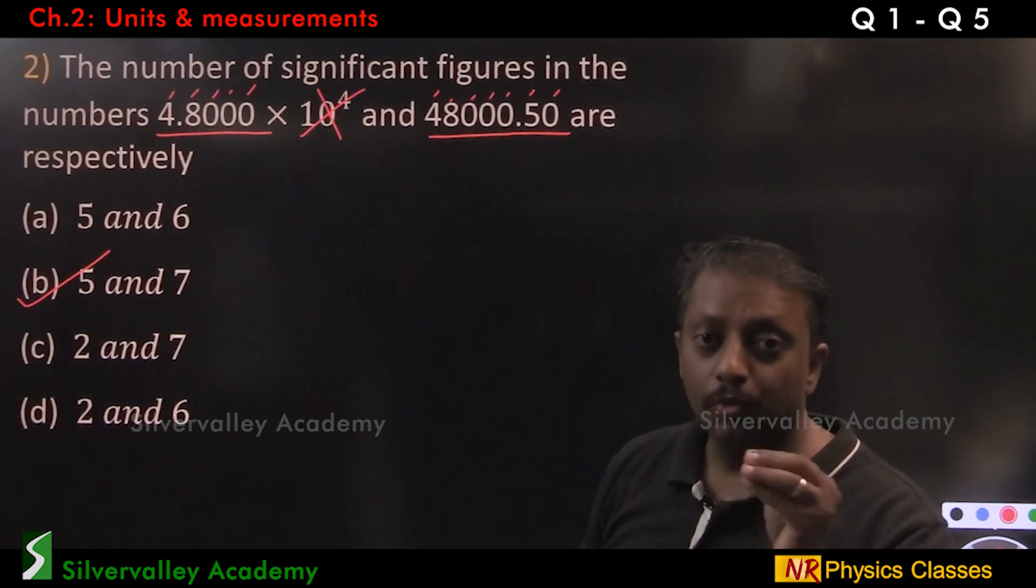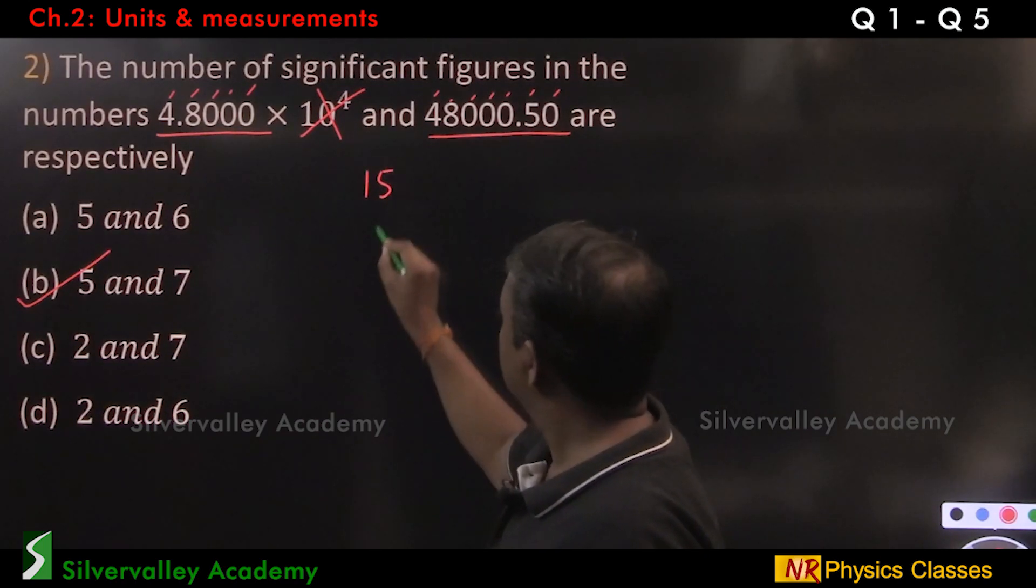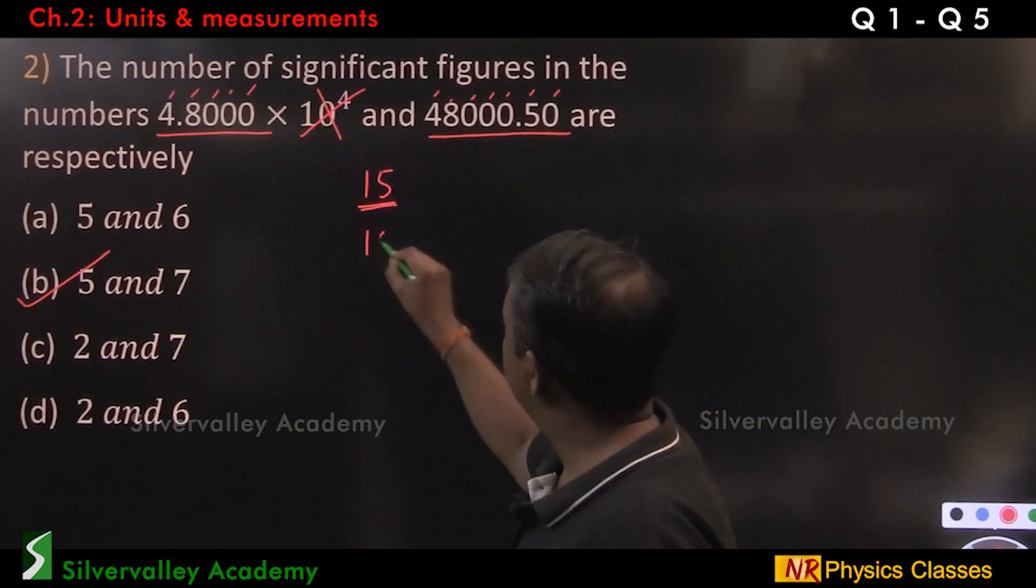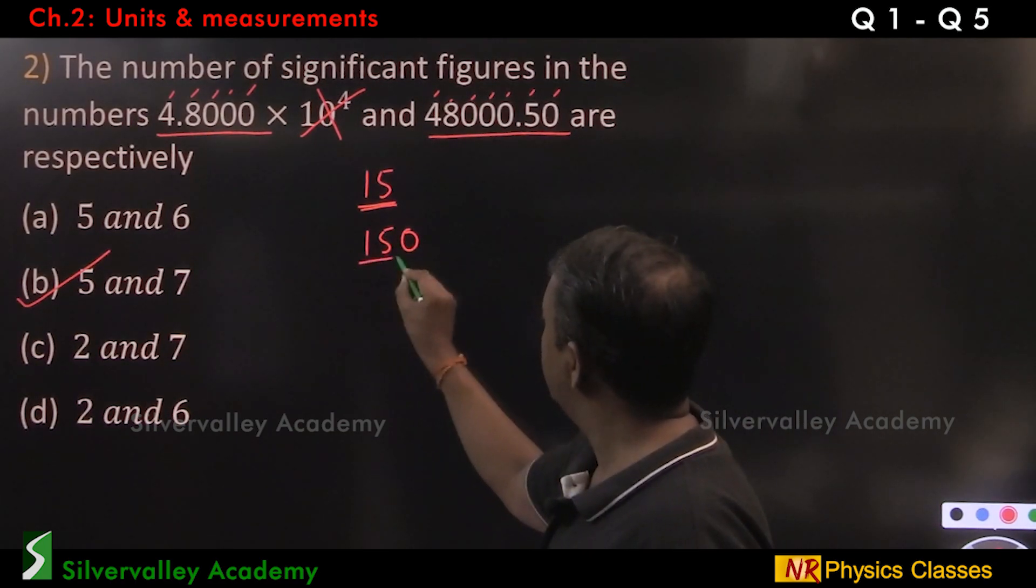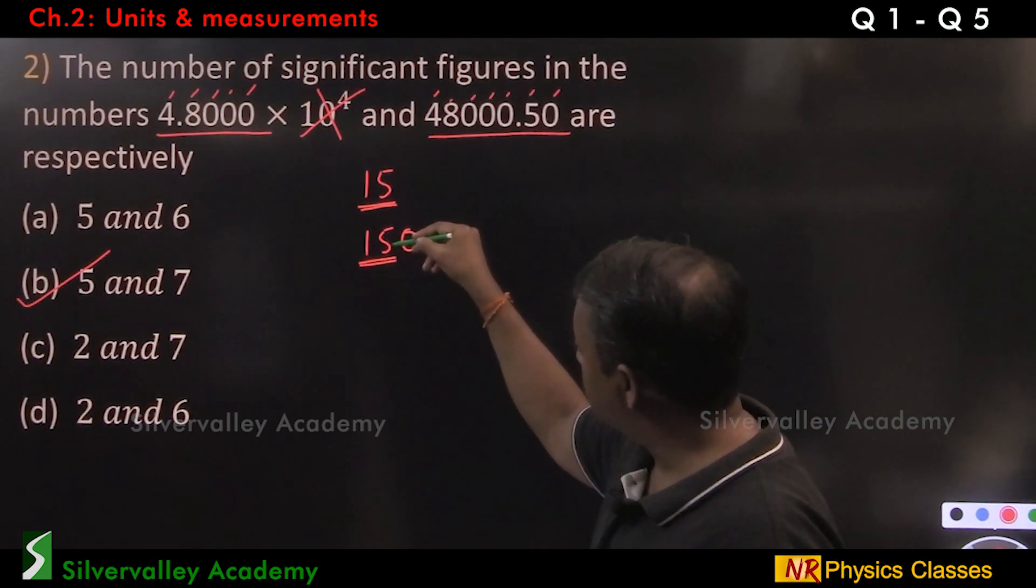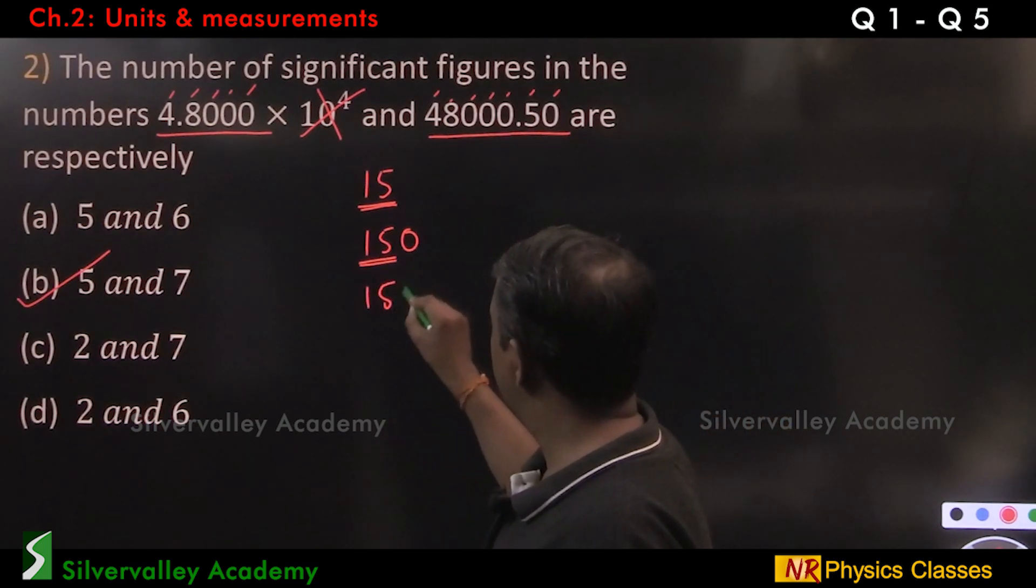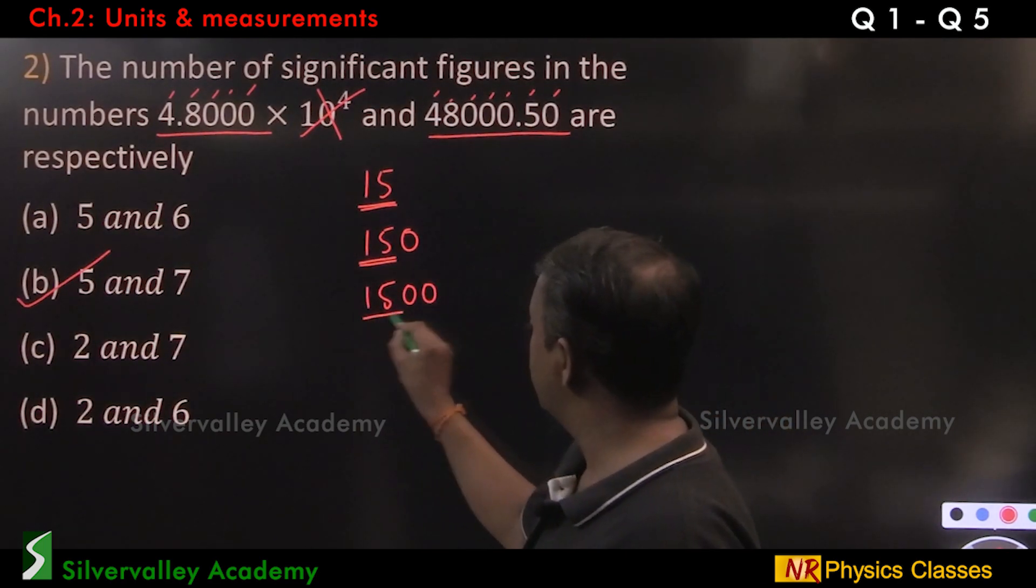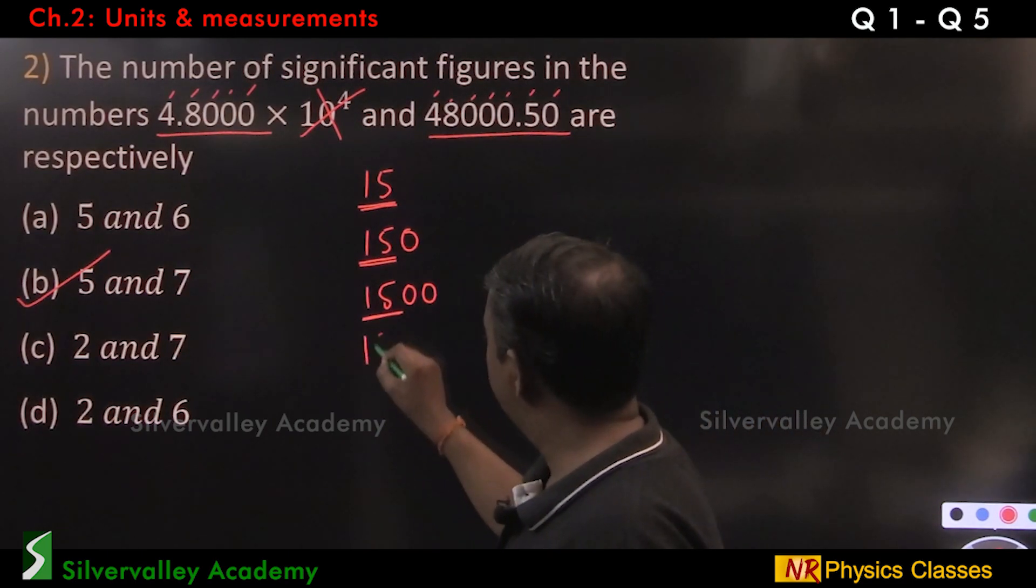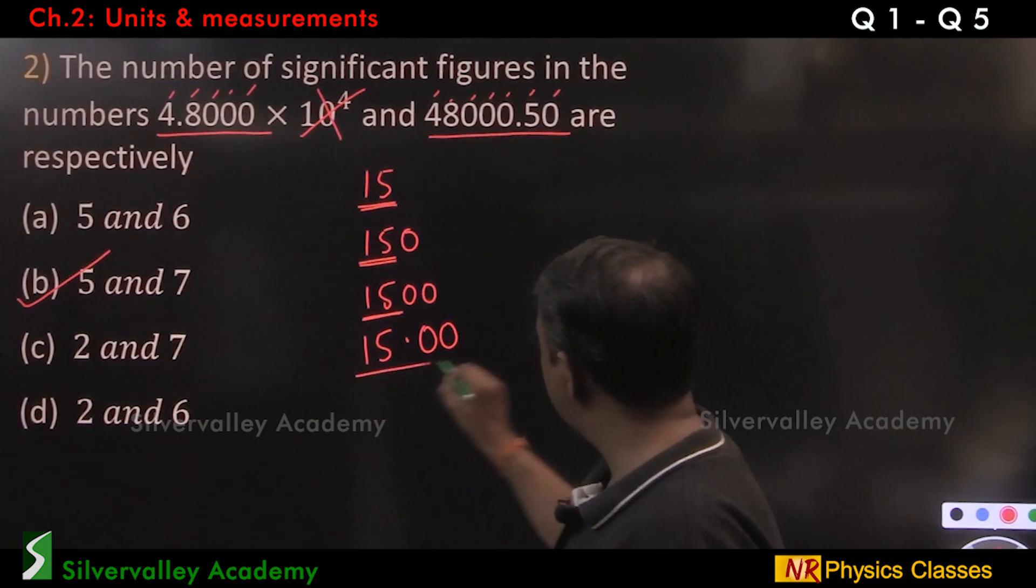Now, a little bit more about significant figures. 15, these two are significant. 1, 5, 0. Only these two are significant. If there is 0 after non-zero digits, it is insignificant. 1, 5, 0, 0. Only these two are significant.